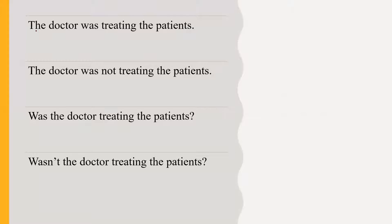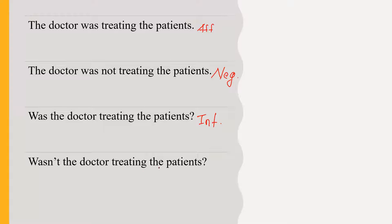Example: 'The doctor was treating the patients.' This is an affirmative sentence. 'The doctor was not treating the patients.' This is a negative sentence. 'Was the doctor treating the patients?' This is an interrogative sentence. 'Wasn't the doctor treating the patients?' This is an interrogative negative sentence. Here 'wasn't' is the short form of 'was not'.